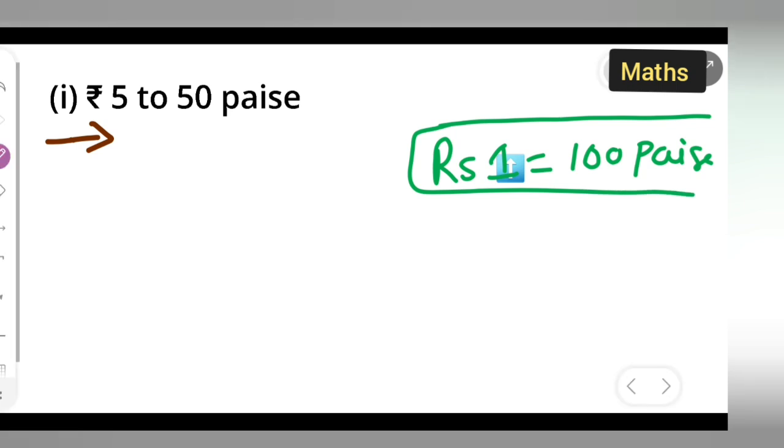Since rupees and paise are given, we need to convert the 5 rupees. So 5 rupees equals 500 paise.